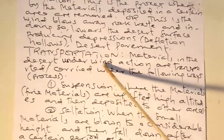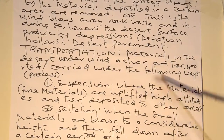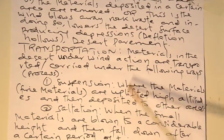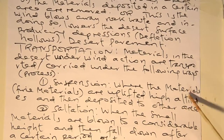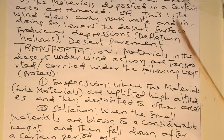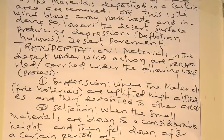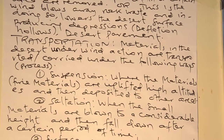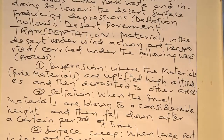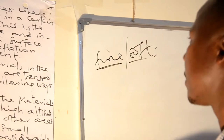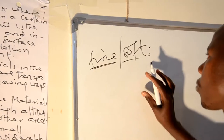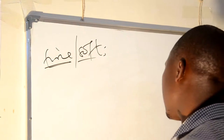Materials in the desert under wind action are transported in the following ways. Firstly, suspension, where the fine materials are uplifted high and then deposited to other areas. Suspension is the transportation of materials which are fine in nature, fine and soft. They are simply carried and uplifted from one particular area to another.